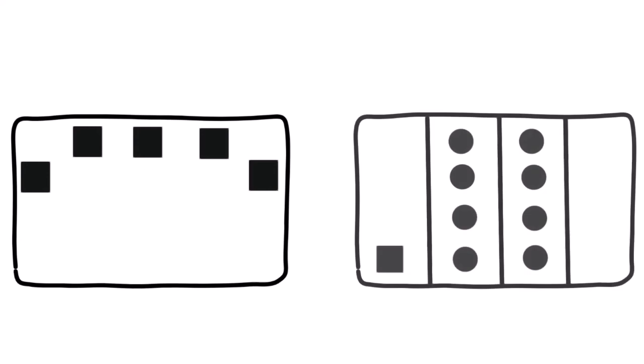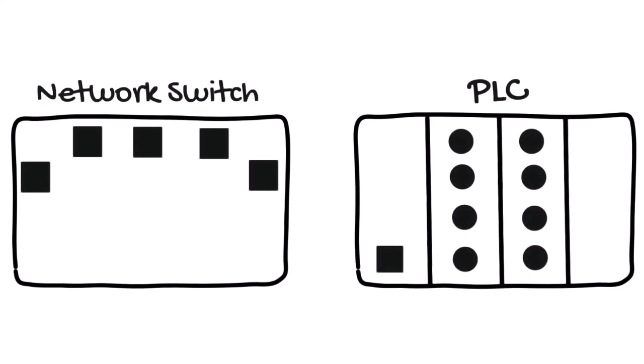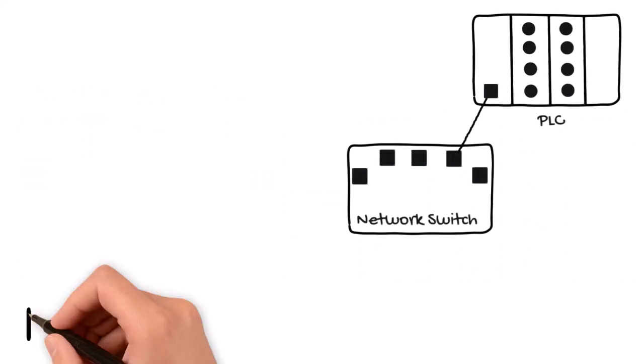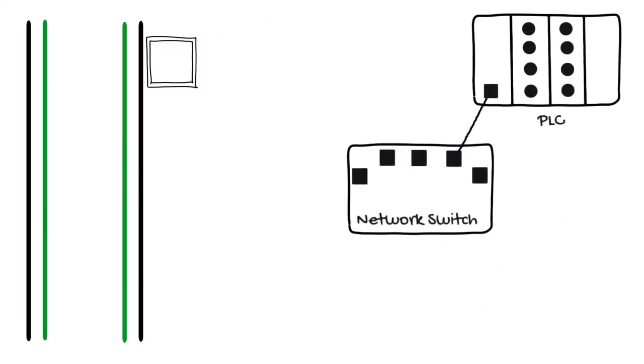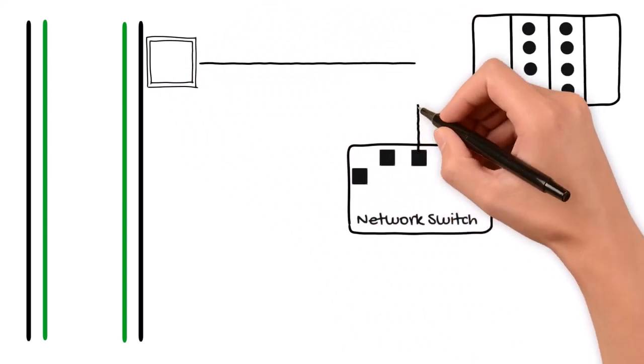Let's take a closer look at how a network switch and PLC communicate with the components of a basic industrial assembly line. A typical assembly line has a conveyor belt with position sensors that communicate with the network switch.